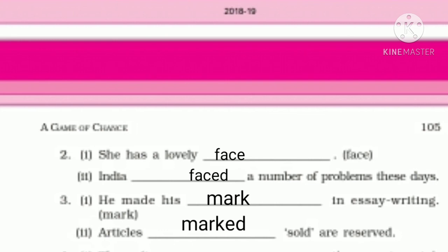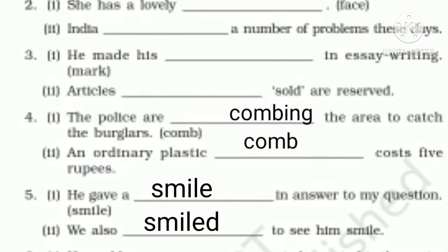Third sentence: 'He made his dash in essay writing.' The word given is 'mark,' used as a noun, so we write 'mark.' In the next sentence, 'Articles marked sold are reserved,' 'marked' is the verb. Fourth: 'The police are combing the area to catch the burglars.' And the next sentence: 'An ordinary plastic comb costs 5 rupees.'